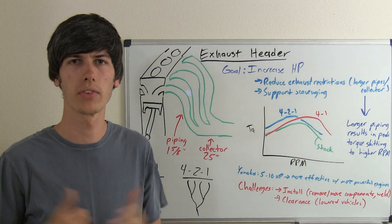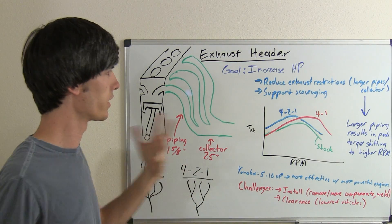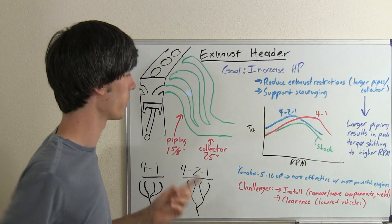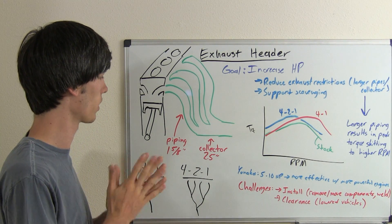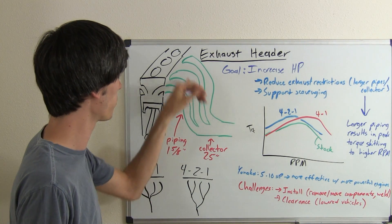The purpose of a performance exhaust header is clearly to increase horsepower. It does this in two main ways. First, it's going to have larger piping. For example, this Yanaka header has 1 and 5/8 inch piping for the primary pipes coming out.